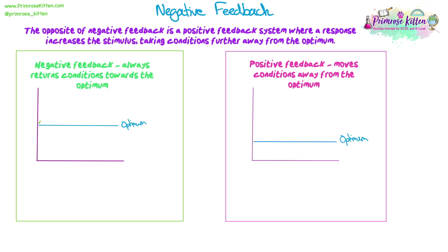The opposite of negative feedback is positive feedback, where a response increases the stimulus and takes conditions further away from the optimum. It's rarer in biology, especially in humans, but it does still happen. You can see the difference most clearly when they're represented graphically. Negative feedback always returns conditions towards the optimum - oscillating within an acceptable range. Positive feedback, by contrast, moves away from the normal level and keeps going further and further, almost exponentially, deliberately moving conditions away from the optimum.